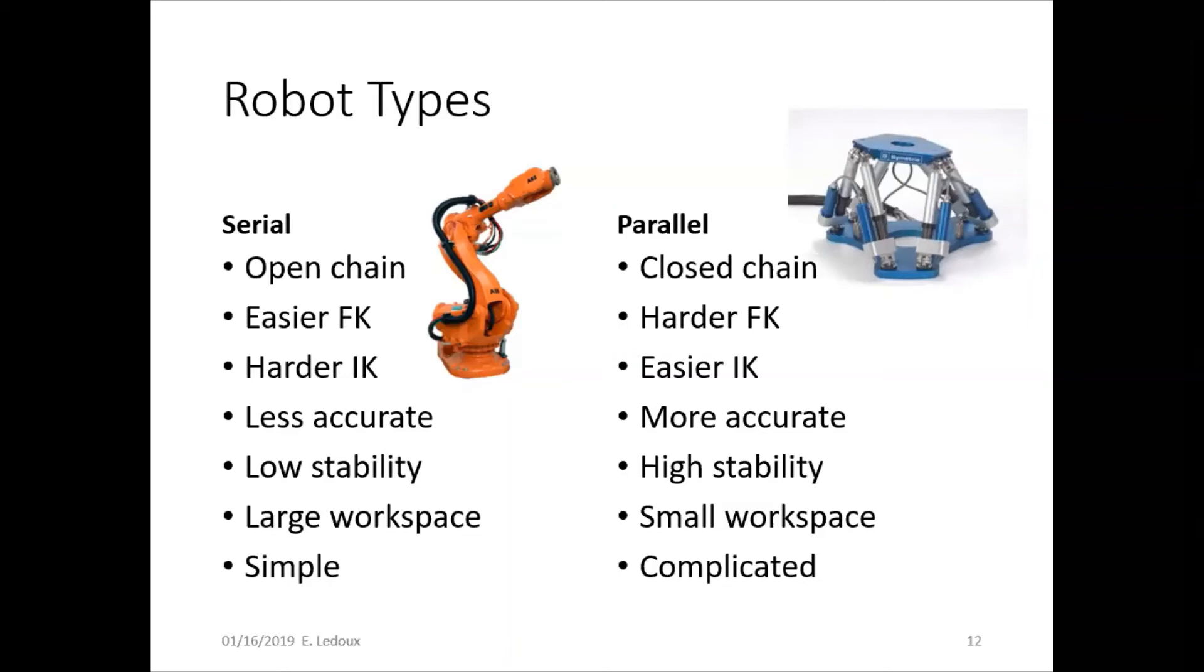Serial robots are more articulate, so they have a big workspace. They can reach lots of stuff at lots of different orientations. Whereas parallel robots don't have a lot of flexibility, but they're very stable because they have multiple legs. They're more accurate because the errors cancel out rather than all adding up. With a serial robot, if joint one has an error, then joint two, then joint three, and so on, the errors will compound. Whereas with a parallel robot, the errors tend to cancel each other out because they pull in opposite directions.